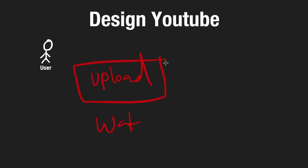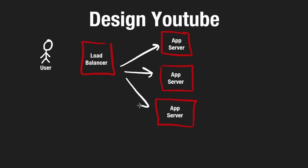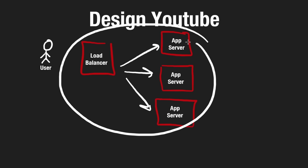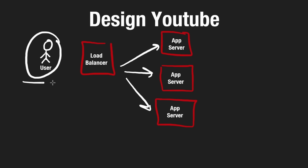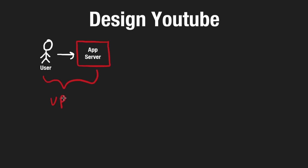Since we're dealing with such a massive scale — 50 million uploads per day — we probably can't handle that with a single server. So we would most likely have a load balancer sitting in front of a bunch of application servers so that we can scale horizontally. This is a pretty generic thing. For now let's just simplify our design and draw it like the user is making an upload request to the application server, even though under the hood we know it's going to need to be load balanced.